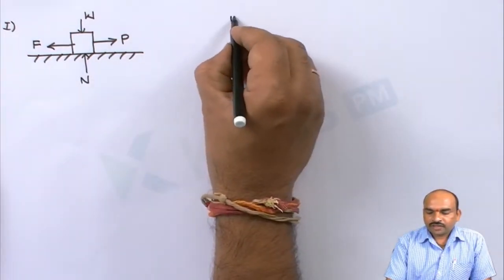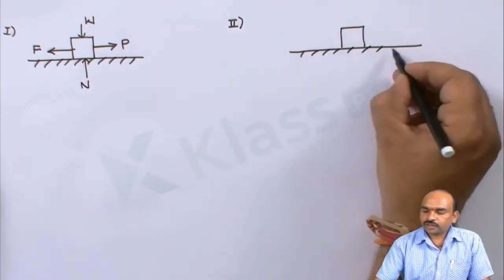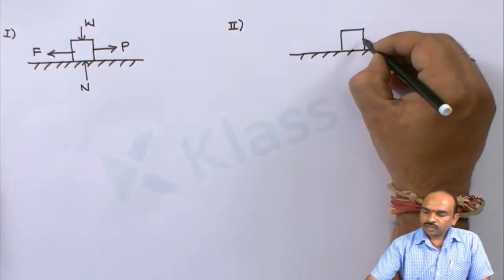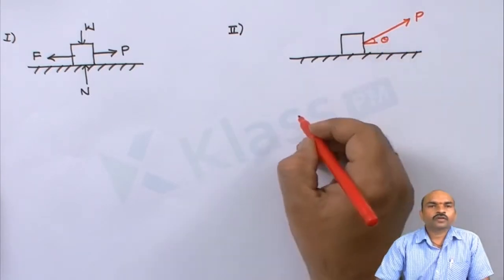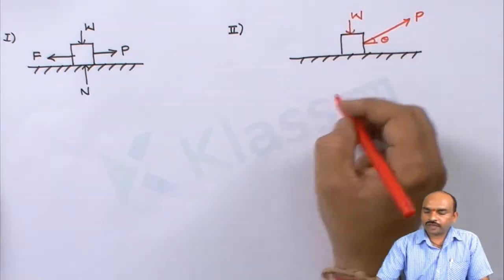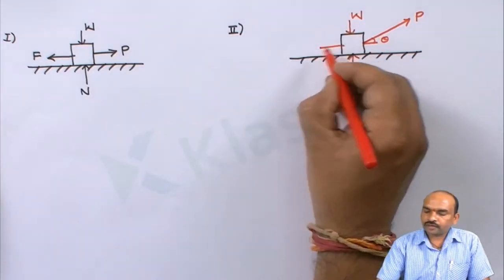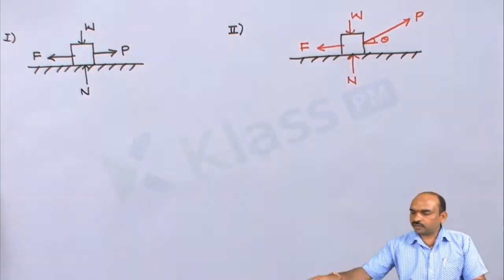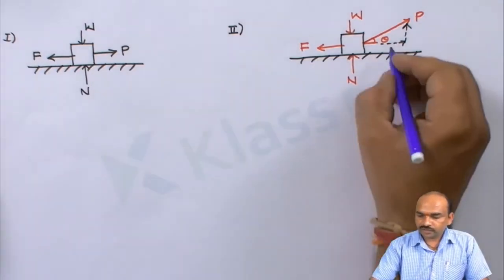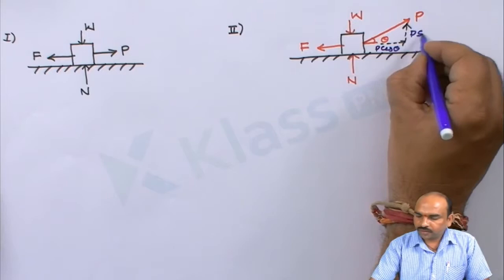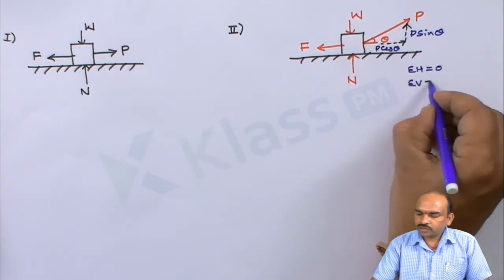The second case is also a body resting on an inclined plane. The difference here is that force P is applied at an angle of theta. The weight acts downward, there is a normal reaction, and since the body moves to the right, friction acts in the opposite direction. Because it is an inclined force, we write the components of P: P cos theta and P sin theta. Then we apply equilibrium equations — sigma Fx = 0 and sigma Fy = 0 — and solve.